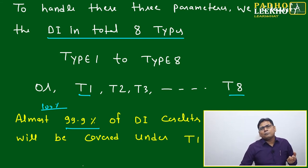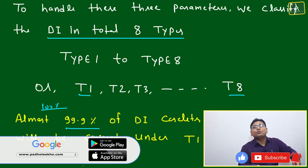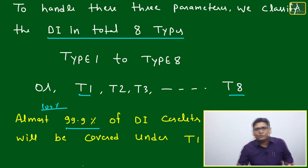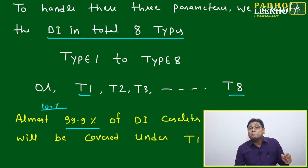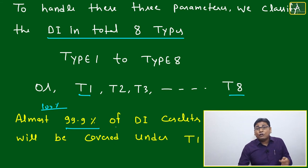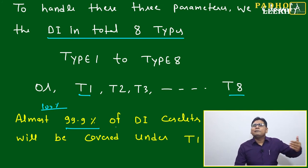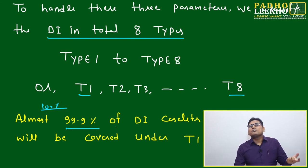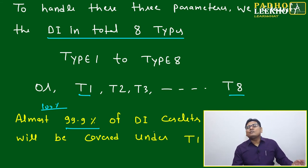When you recognize — 'this is a T4 caselet' or 'this is a T5 caselet' — your brain immediately recalls the list of tools for that type. Your reaction time, response time, and confidence level will improve dramatically. You will understand the main crux of DI: categorizing the caselet and then applying the right tools developed for each type.